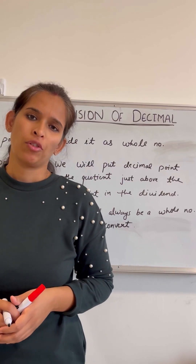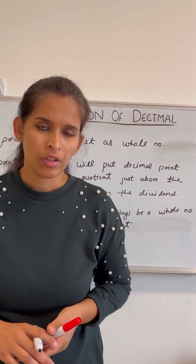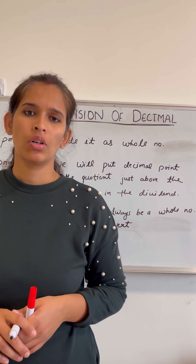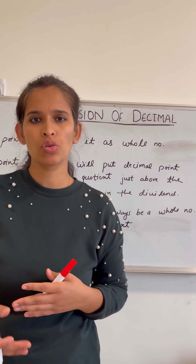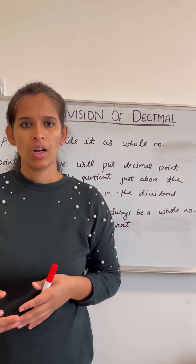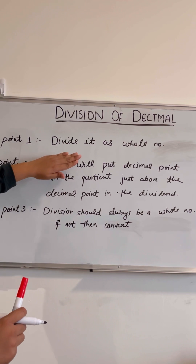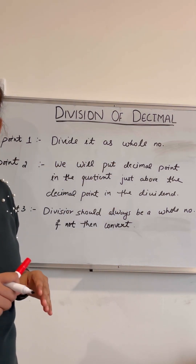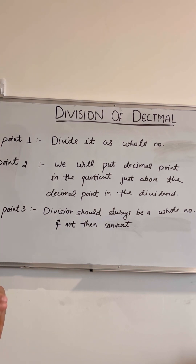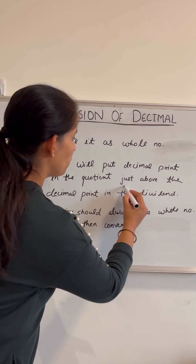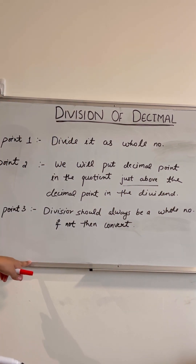Hello everyone, wishing you all a very happy new year. Today we are going to learn how to perform division with decimals. Before we start solving problems, we should remember a few key points. The first point is: divide it as a whole number — consider any decimal number as a whole number and divide normally. The second point is: put the decimal point in the quotient just above the decimal point in the dividend.